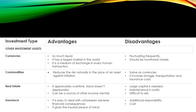For real estate, the advantages are: it appreciates over time — land does not depreciate — and it can be a source of income. The disadvantages are: large capital is needed, maintenance is costly, and sometimes it is difficult to sell. For insurance, the advantages are: it is easy to deal with unforeseen adverse financial consequences, and it gives the insured peace of mind. The disadvantages are the additional responsibilities and the cost of insurance.